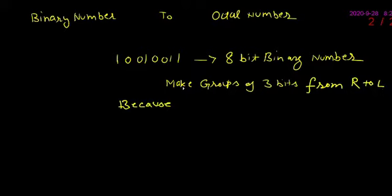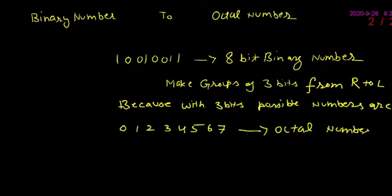अब यहाँ पे हमने 3-bits की grouping की है, वहाँ पे 2 या 4 number use नहीं किया गया है, क्योंकि using 3-bits हम 8 different numbers को represent कर सकते हैं, और octal number के case में वो होते हैं 0 to 7.